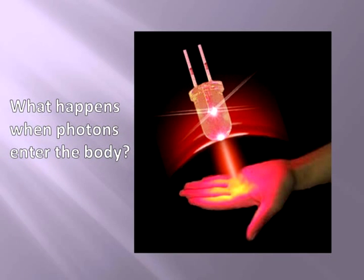I'm going to show you a short animation about the tissue optics process by which light is converted into three forms of energy when it enters your body. There are three energetic effects that take place as light or photons enter the human body.